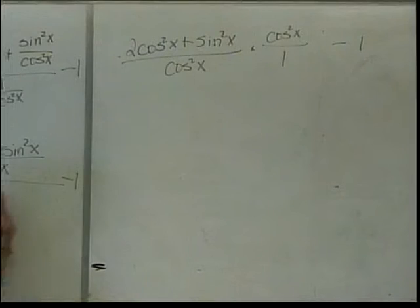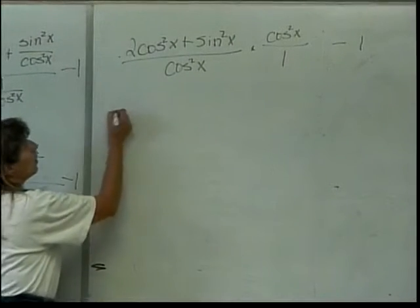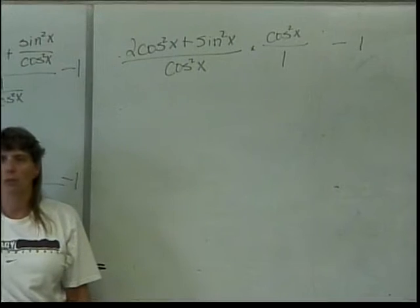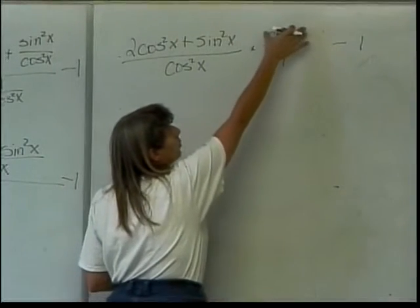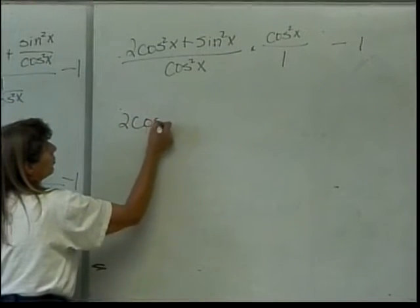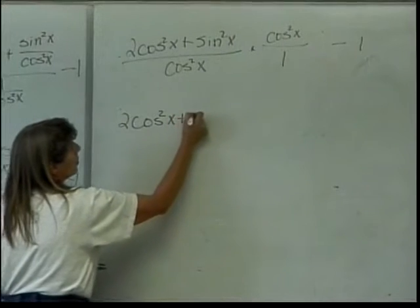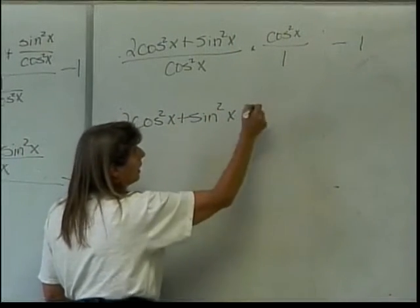So that you'll see step by step what I'm doing. By the way, if you were to skip this step, what happens when I do that multiplication? What do I end up with? Yeah, the cosine squared of x in the numerator and the denominator become 1, so I'm left with just 2 cosine squared of x plus sine squared of x and then that minus 1.